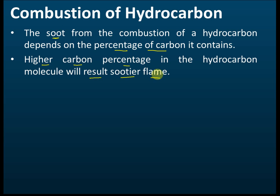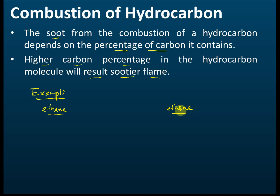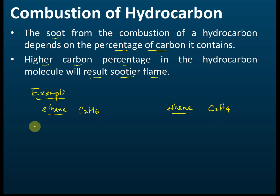For example, let's compare ethane and ethene to see which one produces more soot when combusted. Ethane has the molecular formula C₂H₆, and ethene has the molecular formula C₂H₄. Don't worry about these names for now as we'll cover them later.